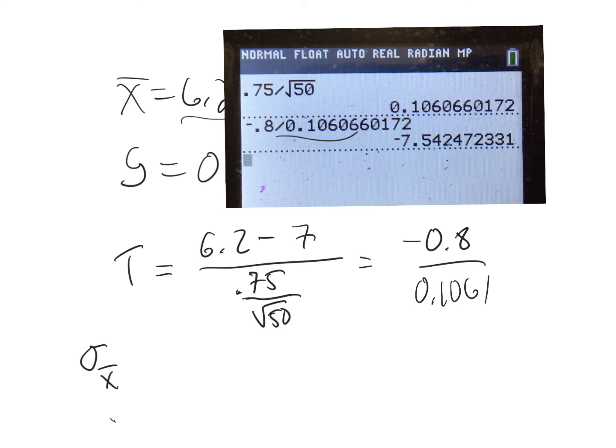That's what I got for a standard deviation for the sampling distribution, the one we're going to use for this. That tells me a t-score test statistic of negative 7.54, two decimal places usually enough. That's a pretty small, very negative test statistic.